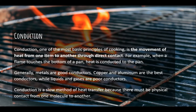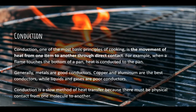Conduction is one of the most basic principles of cooking — the movement of heat from one item to another through direct contact. For example, when a flame touches the bottom of a pan, heat is conducted to that pan. Generally metals are good conductors; copper and aluminum are the best, while liquids and gases are poor conductors. Conduction is a slow method of heat transfer because there must be physical contact from one molecule to another.